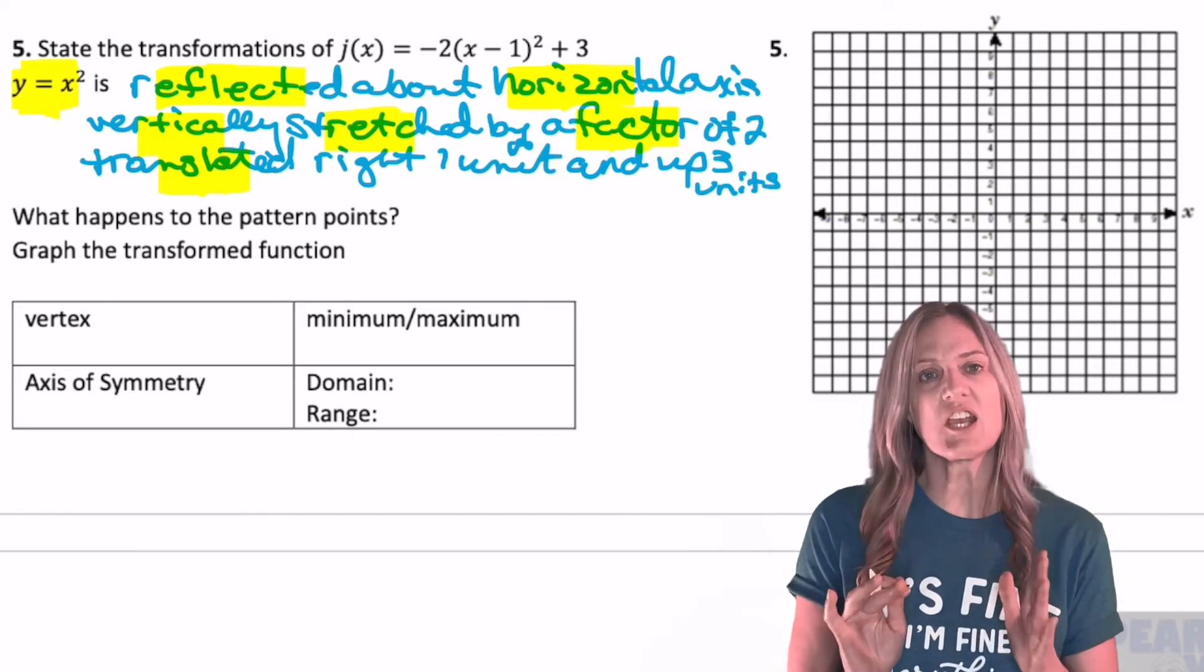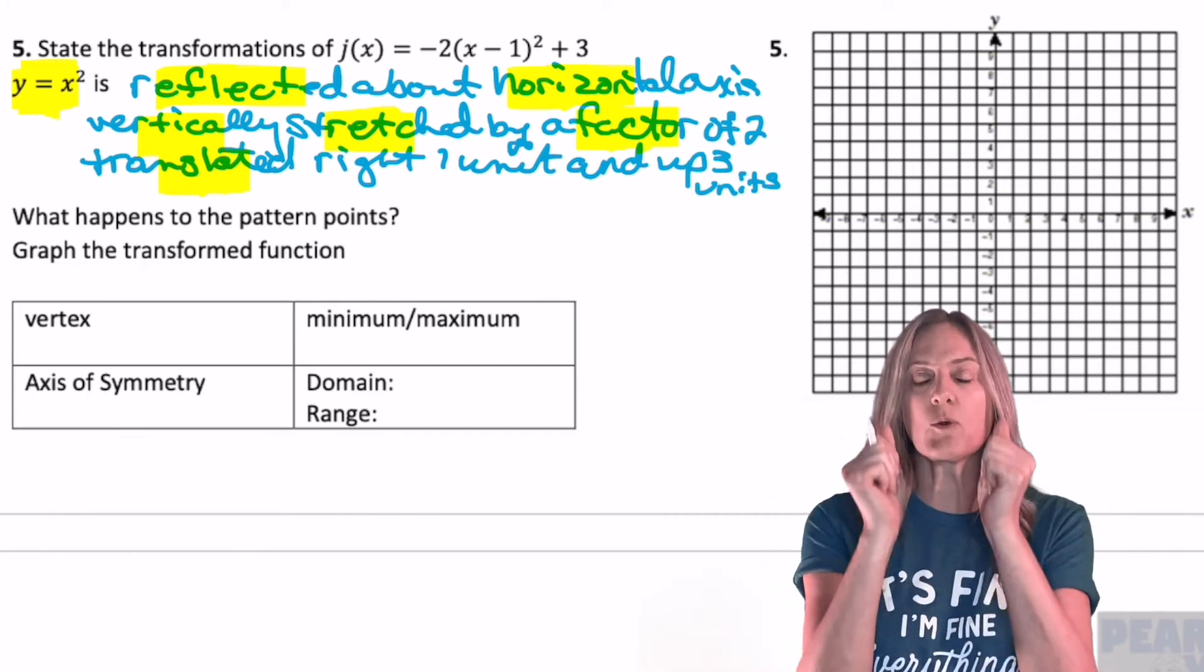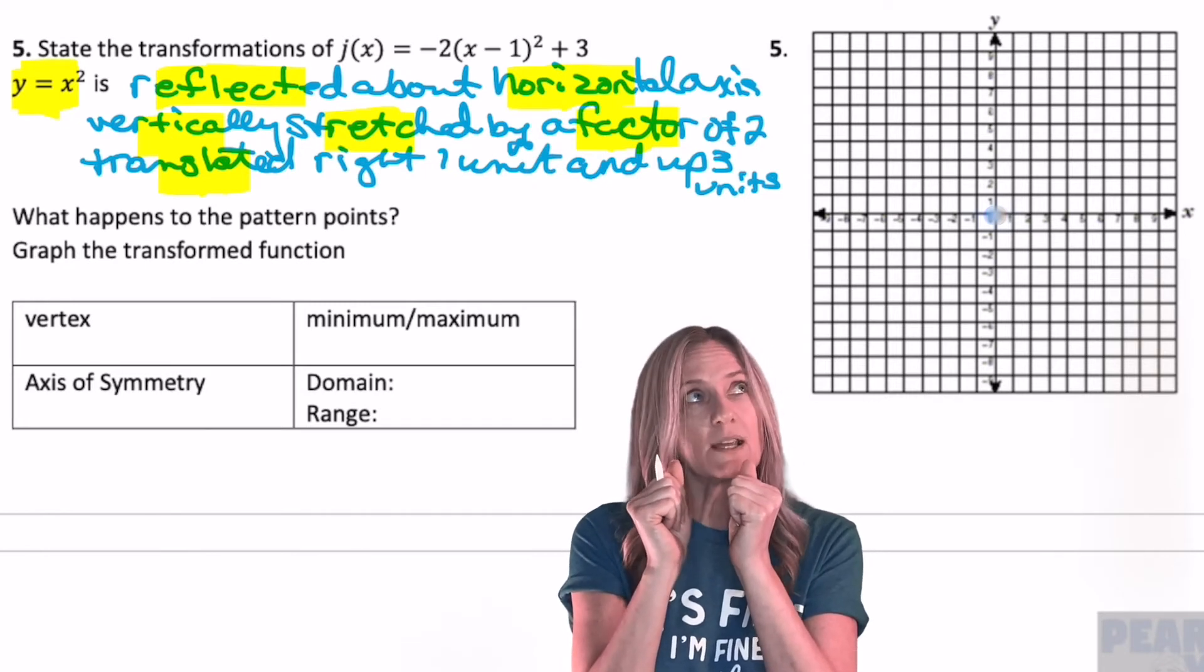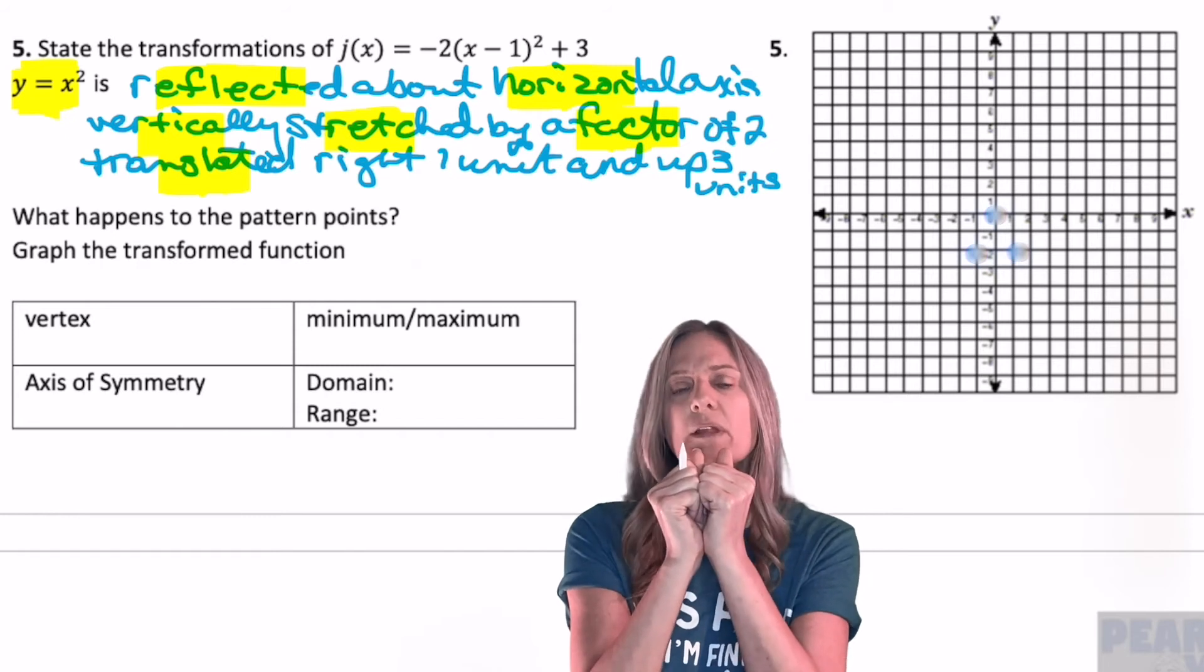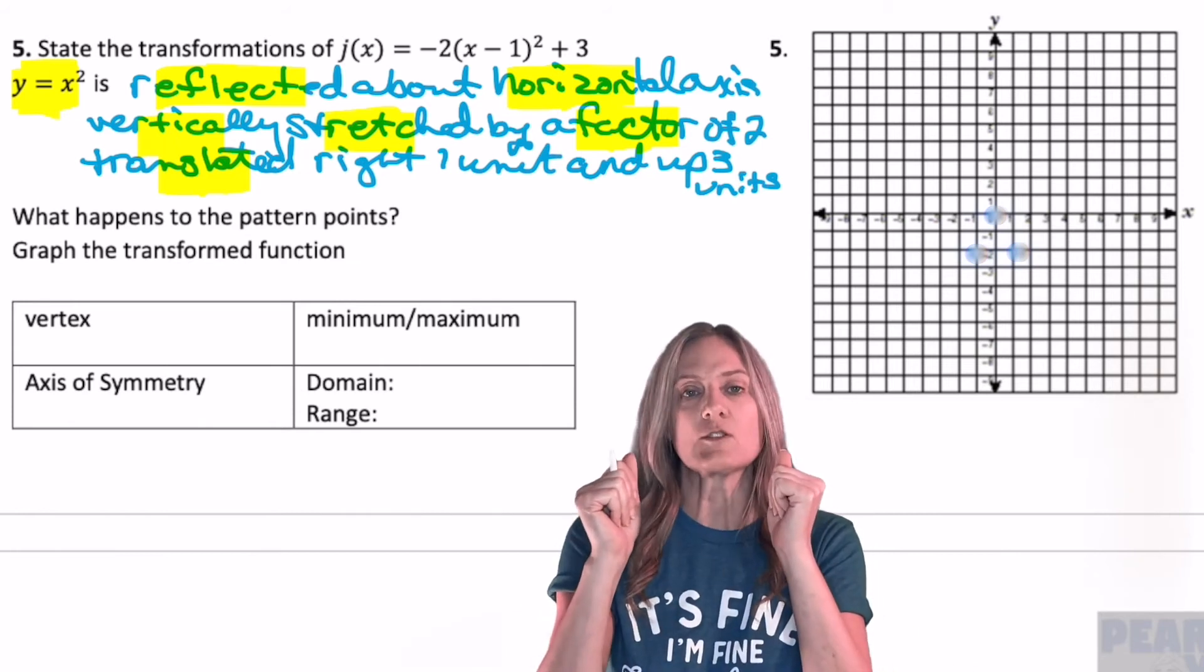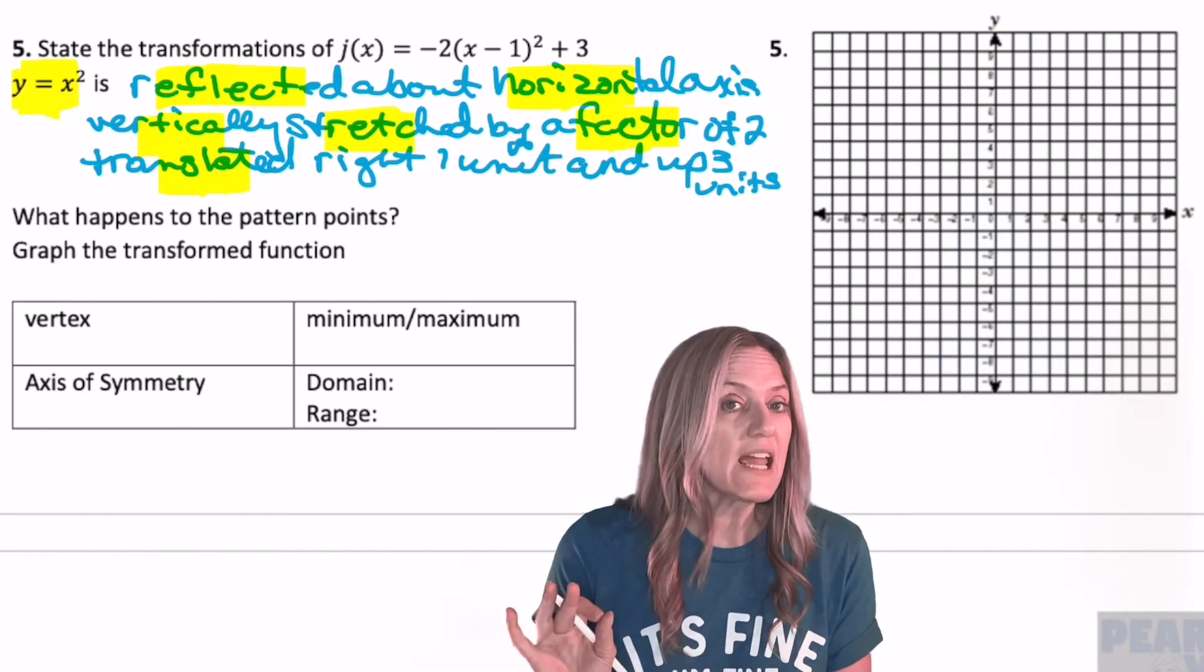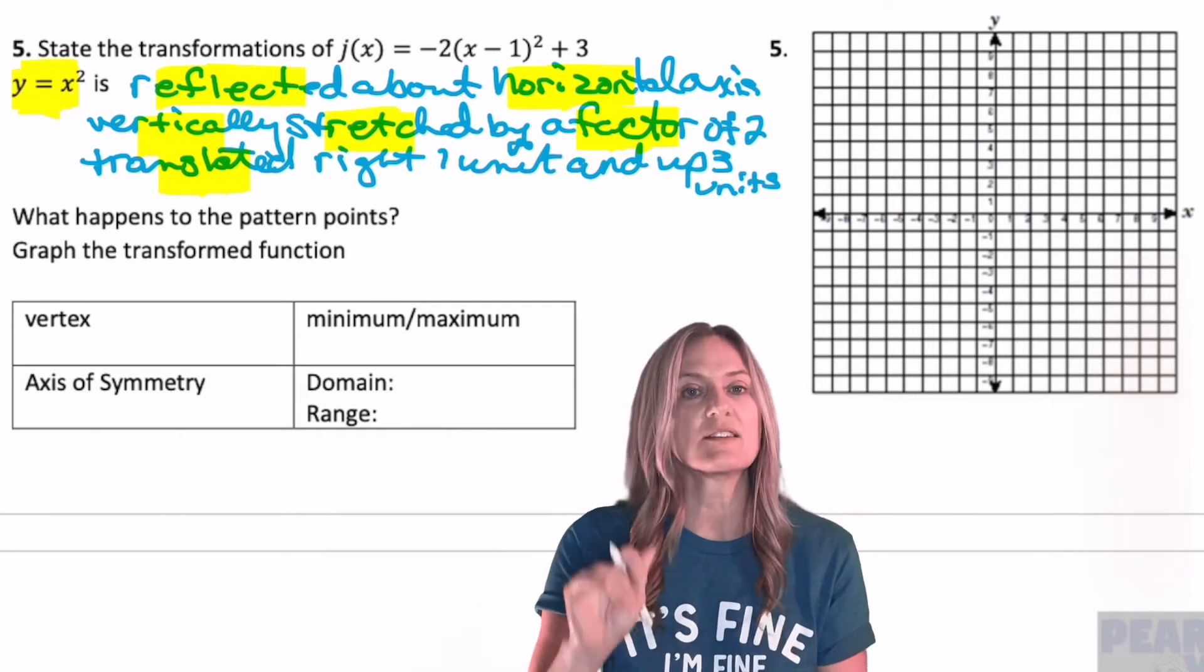Now, what about the pattern points? Have those changed? Yeah, they have because we have a reflection and we have a vertical stretch. So instead of going over one, up one, we're at the vertex. We have to go over one, and then it's down because it's reflected and vertically stretched by a factor of two. So one times two is two. So I'm going to go from the vertex over one, down two, back to the vertex. What's that next set of points? Normally, I'd go over two and up four, but it's reflected. So now I'm going to go over two. It's reflected and vertically stretched. So four times two is eight. So I would have to go down eight units. Pattern points have changed. So without a table of values, we can now graph this. Let's plot the vertex and then go through those pattern points with the transformations. Pause. Try it.